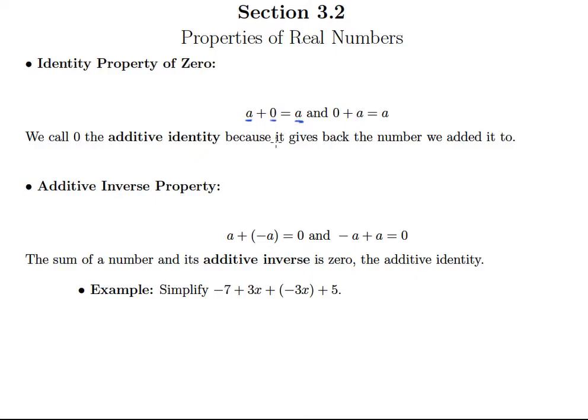We all know that. Five plus zero is still five, zero plus six is still six. We're kind of stating the obvious here, but we're putting it in a formal property because we'll be able to use this as we start to get into some formal algebra. We call zero the additive identity because it gives us back the number we added it to.